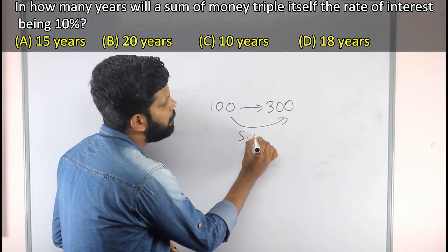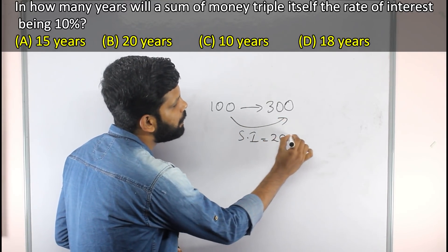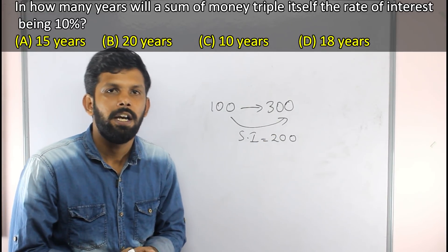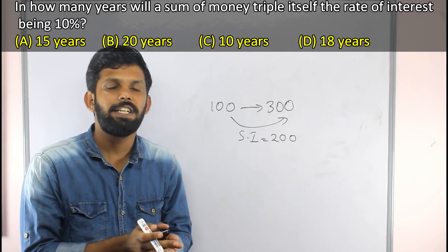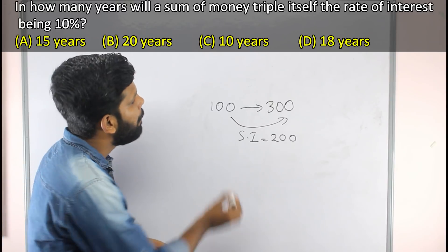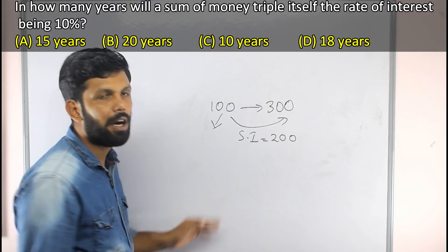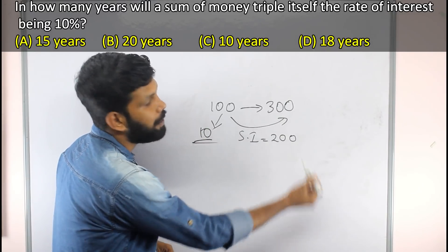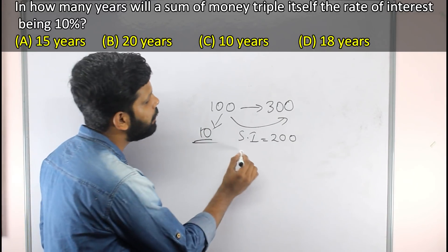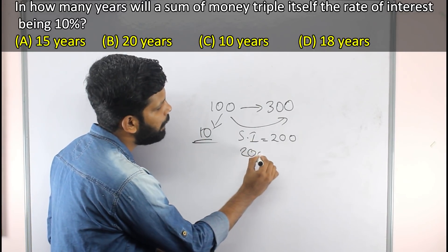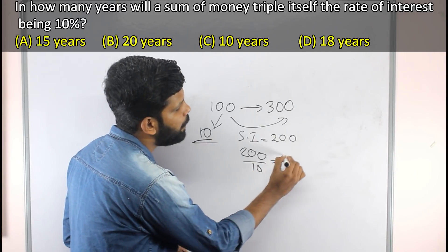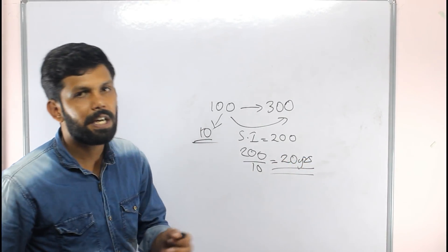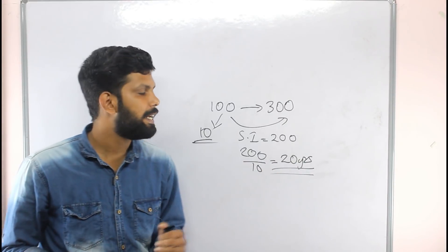Simple interest question: The simple interest is equal to $100 and $200. The time is 20 years. This gives the right answer for the simple interest problem.